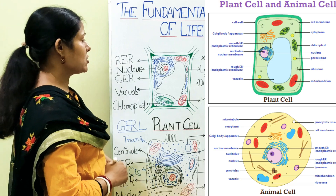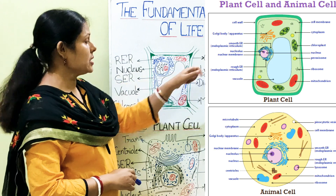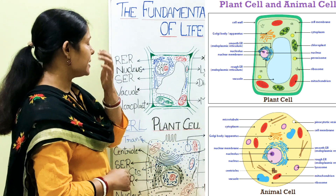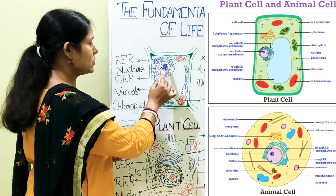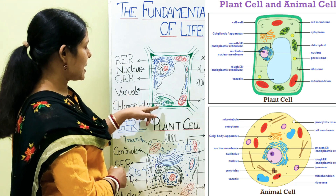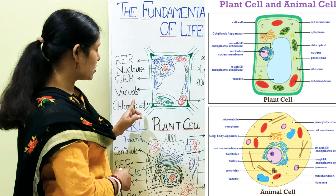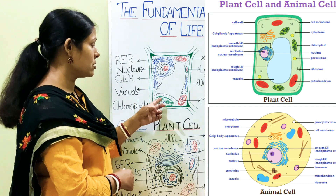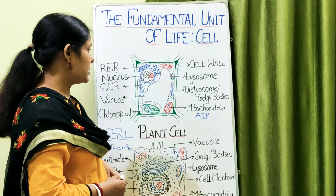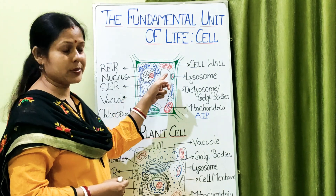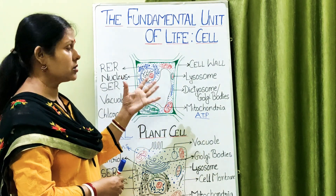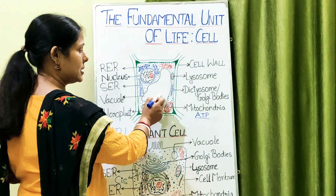Now let us compare plant and animal cells. In plant cells, there are two outer membranes — the outermost non-living cell wall and the inner selectively permeable cell membrane. Animal cells have only the cell membrane. In plant cells the nucleus is peripheral; in animal cells the nucleus is central. Plant cells have plastids (chloroplast, leukoplast, chromoplast) associated with photosynthesis, which are absent in animal cells. Plant cells have a large central vacuole that maintains turgidity, while animal cells have only small vacuoles.